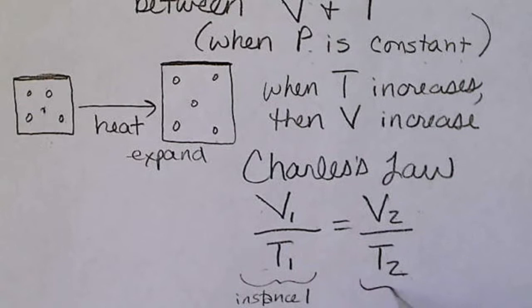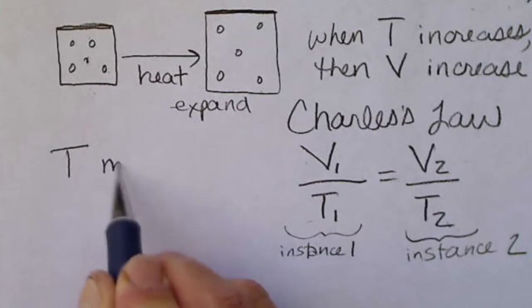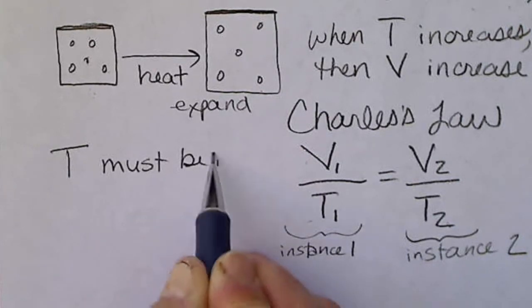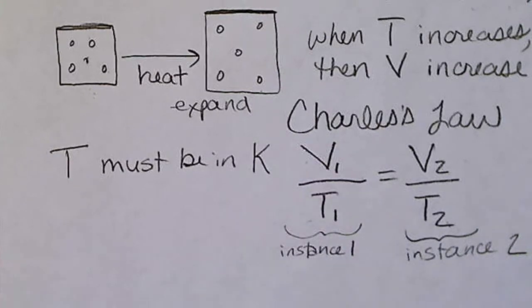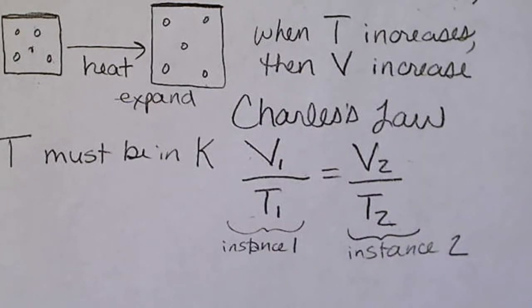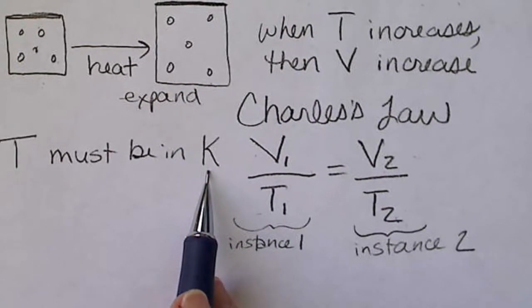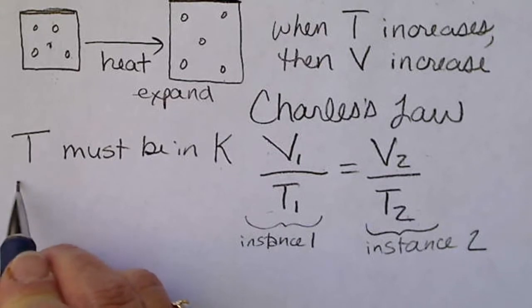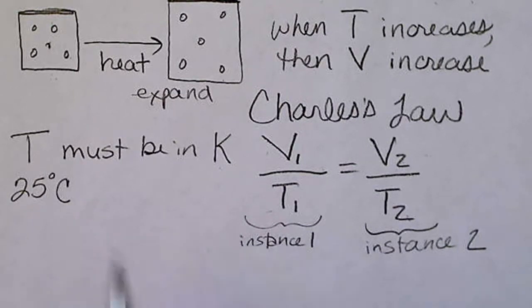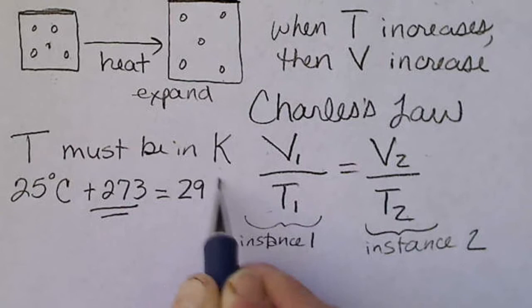The subscript twos mean we are at instance two. What's different about this law is that the temperature must be in Kelvin. In fact, this relationship is what led us to the concept of absolute zero — if we cool a gas down to absolute zero, its volume would be zero. For example, 25 degrees Celsius converted to Kelvin is 25 plus 273, which equals 298 Kelvin.